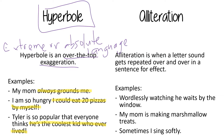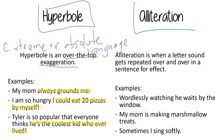The second thing we're going to look at today is alliteration. Alliteration is when a letter sound gets repeated over and over in a sentence for effect — meaning the same sound happens in multiple different words. Let's look at some examples.